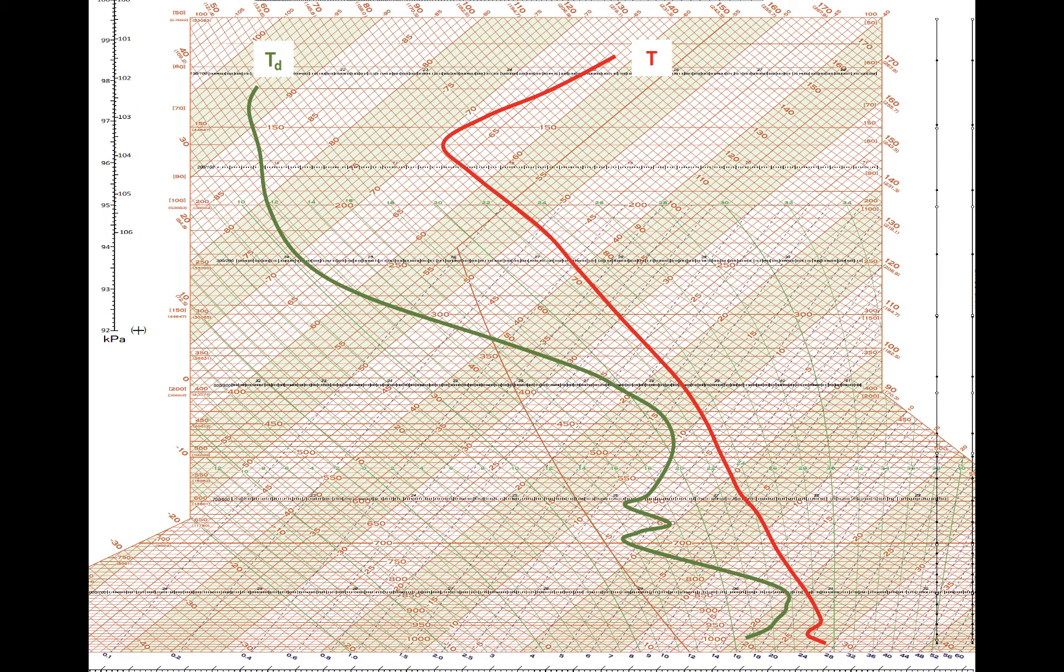Suppose we have this hypothetical sounding with profiles of temperature and dew point shown in red and green respectively, and we are interested in the values of the three variables previously mentioned at 900 millibars. The dew point and temperature at 900 millibars are denoted by the blue dots. The temperature and dew point are respectively about 25 degrees Celsius and 21 degrees Celsius.